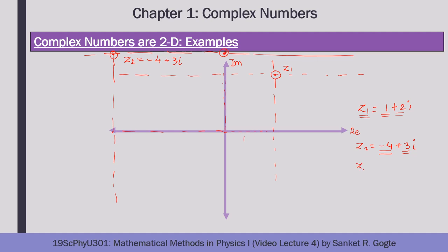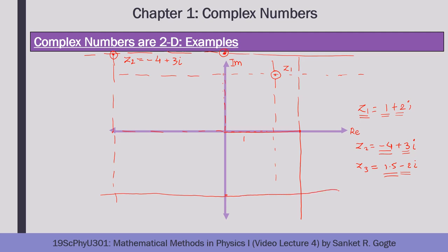Let's consider z3 = 1.5 − 2i. This complex number lies in the fourth quadrant. We move towards the positive real axis at a distance of 1.5 and draw a line parallel to the imaginary axis. Then we move towards the negative imaginary axis by 2 and draw a line parallel to the real axis. Where these two lines meet is the complex number z3 = 1.5 − 2i. In this way, you can plot any complex number in the Argand plane.